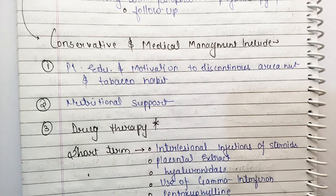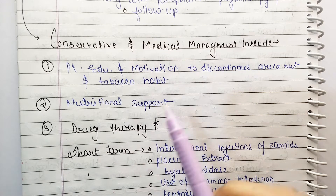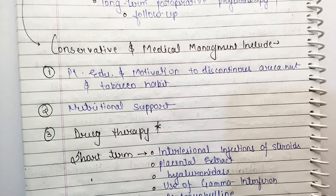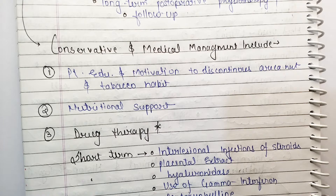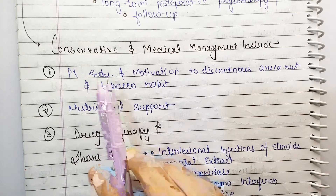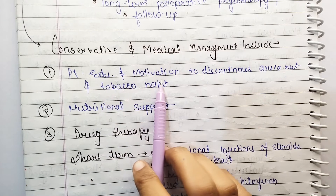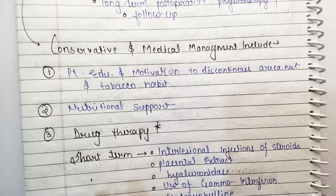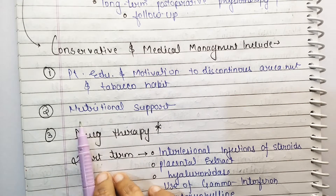In conservative and medical management, first you have to give education to the patient. That means telling the patient that eating pan masala and tobacco will cause their mouth to close and they will not be able to eat food. Patient education is very important, and you have to motivate the patient to discontinue areca nut and tobacco habits.